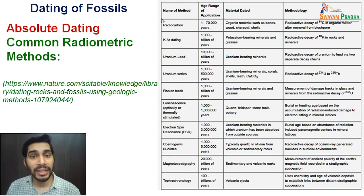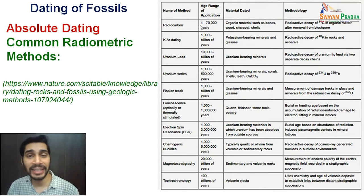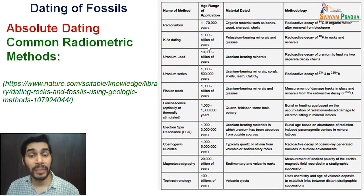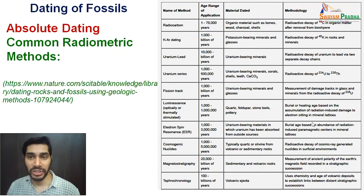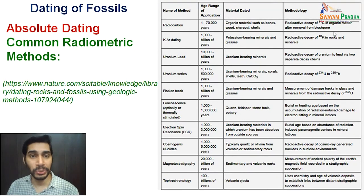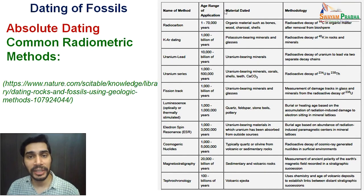For example, radiocarbon dating has a range of 1 to 70,000 years, so if a fossil falls within that range, radiocarbon methods can be used. But for very old fossils, radiocarbon is not suitable — for fossils from a thousand to billions of years old, it is better to use potassium-argon dating. A table summarizes the comparison of various radioactive methods with their age range of application, methodology, and material dated.